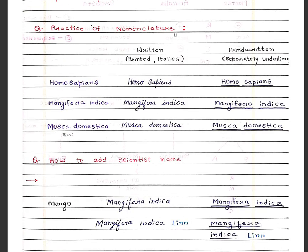Next question: practice of nomenclature. Homo sapiens — if printed, it is written in italics; if handwritten, it is underlined separately. Mangifera indica is the scientific name of mango — if printed in italics, if handwritten then underlined. Musca domestica is the scientific name of housefly.